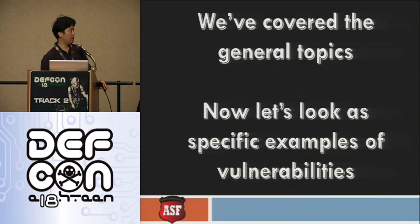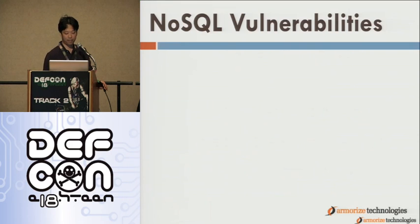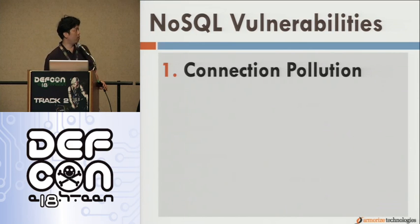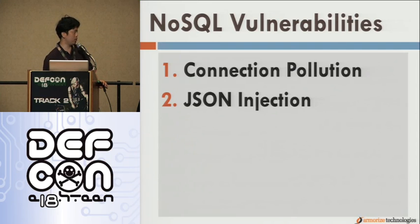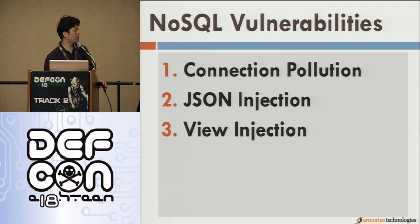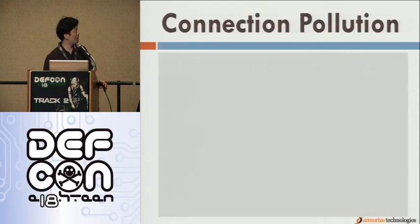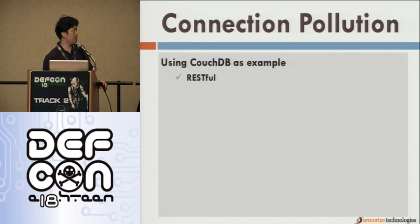We've covered the general topics. Now let's look at specific examples of vulnerabilities. We'll be looking at examples including connection pollution, JSON injection, view injection, and key brute forcing. We'll start with connection pollution, using CouchDB as an example.